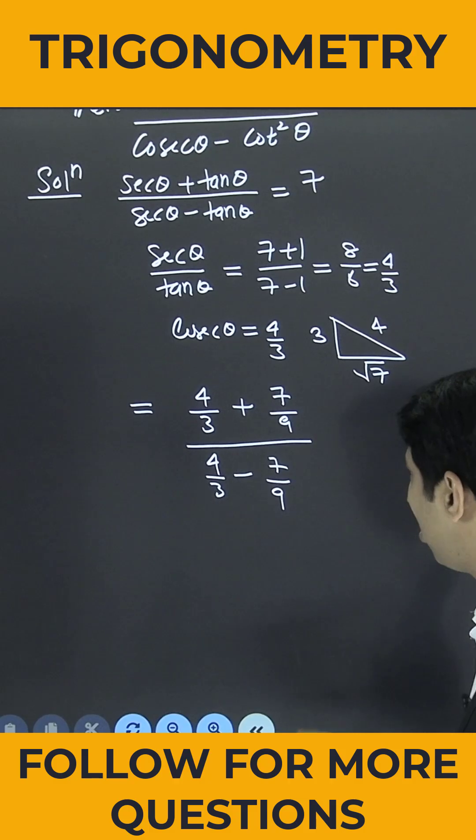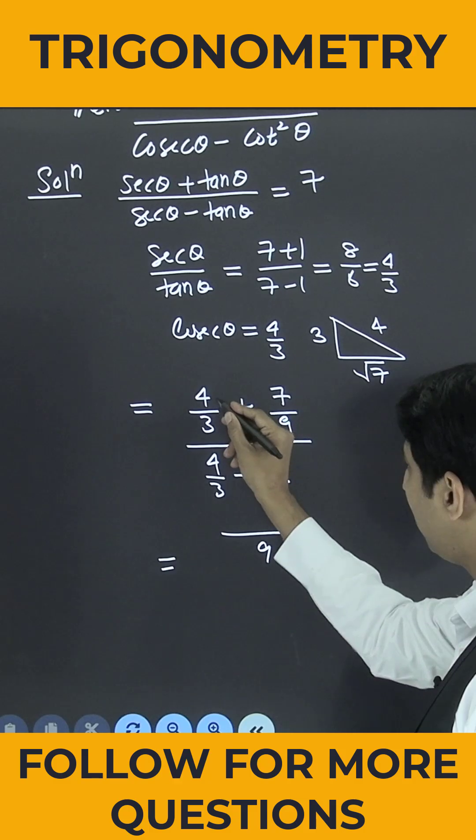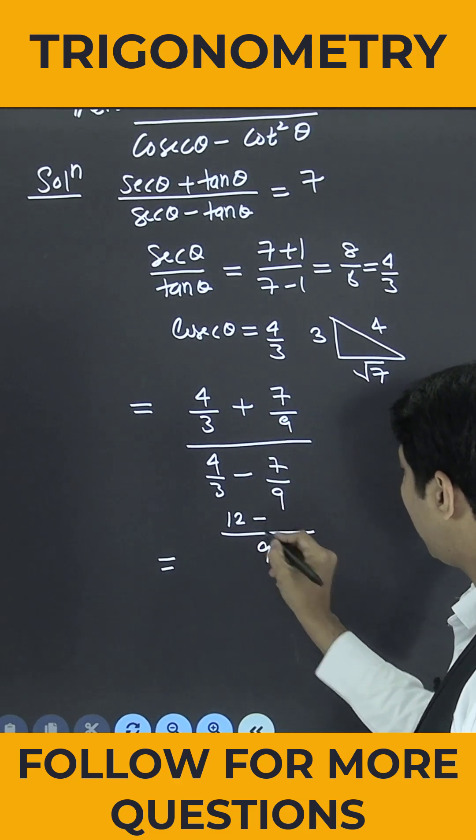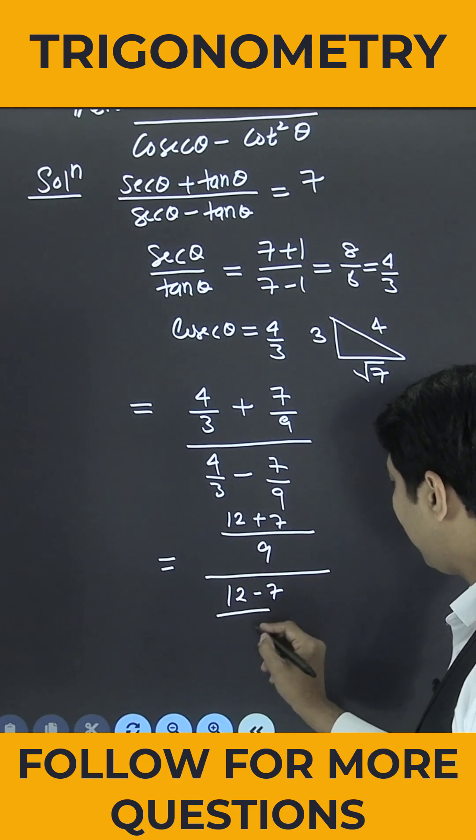Now we have to solve this. So if I take the LCM in the numerator 9, it will become 4 times 3 is 12, 12 plus 7, and the denominator will become 12 minus 7 divided by 9.